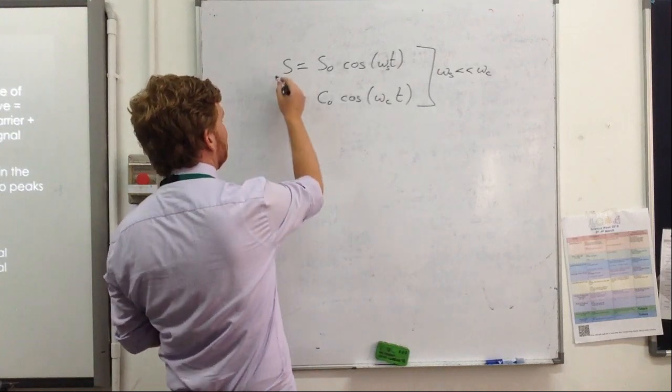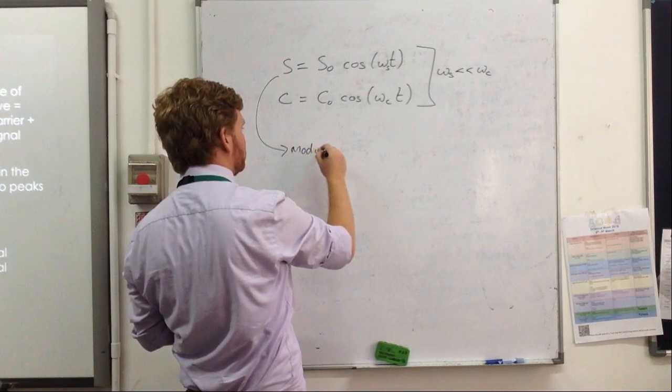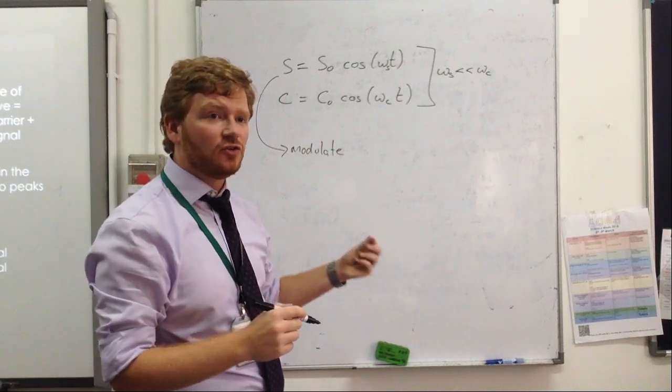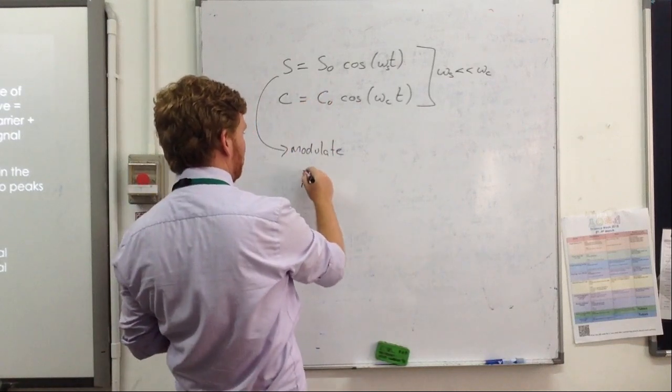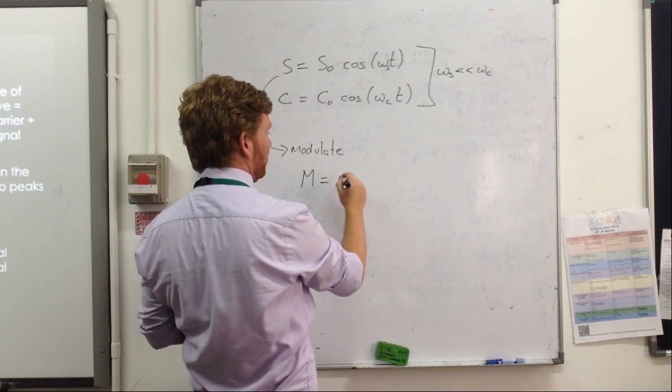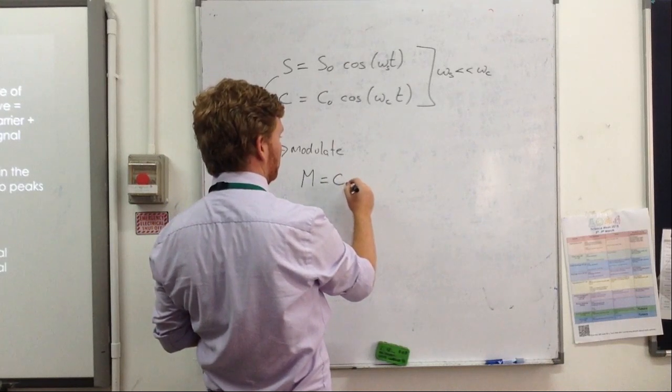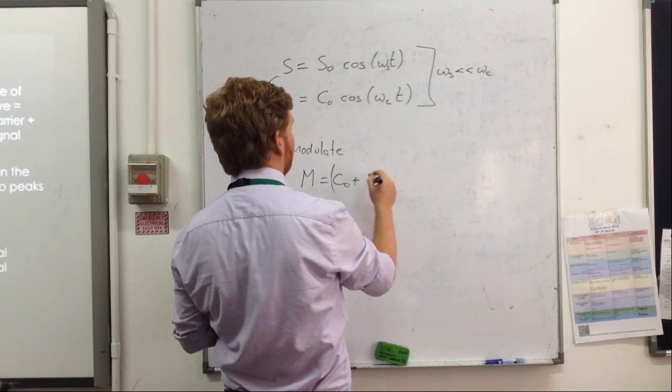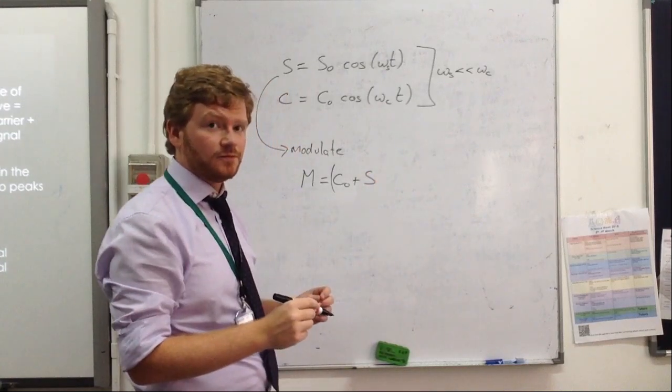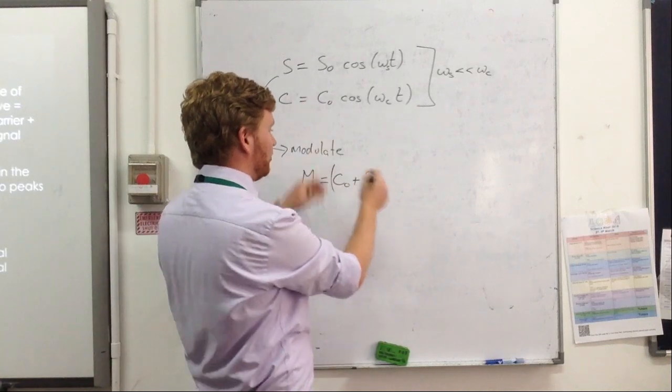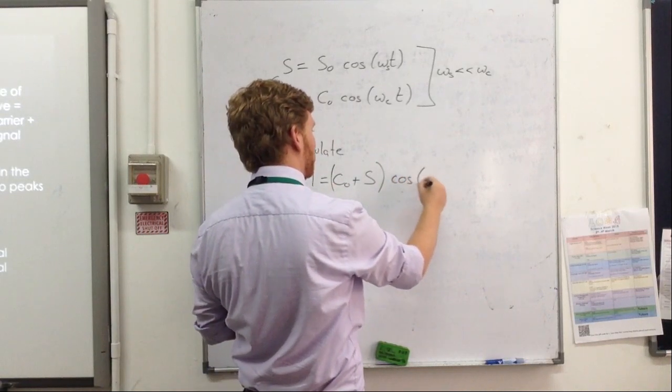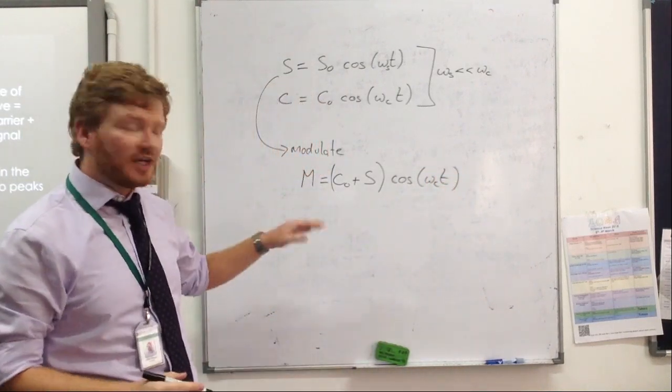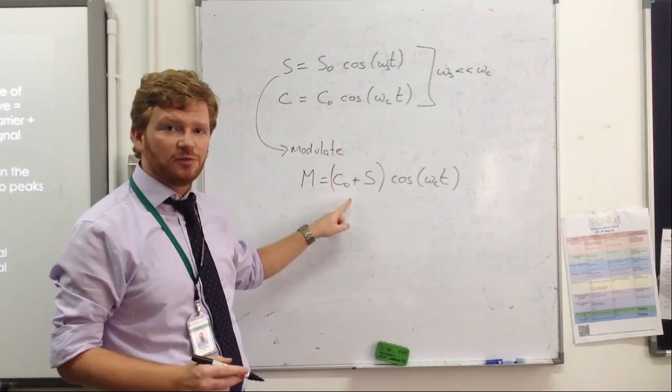So what I can say is that to modulate it, it becomes, I just want to change the modulation of the carrier wave. So the modulated wave will be this. It will be, it will be the start of the carrier wave, so the amplitude of the carrier wave at its basic level, plus the signal. Okay, I'm going to add the signal to this sort of multiplier at the start, and then I'll have that times cosine of omega of the carrier times time. So what that's doing is this term here is defining the amplitude of my wave.